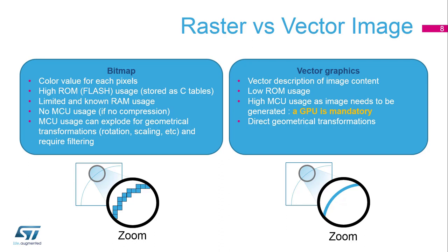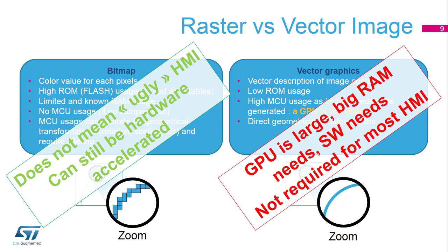Regarding geometrical transformation, a zoomed bitmap reveals individual pixels, whereas zooming a vector graphic just adds a scale factor to its description, which is then computed at display time — a direct geometric transformation but with significant processing. For GUI on microcontrollers, we will use only bitmaps, because we cannot afford a GPU, which is large, requires a lot of RAM, and complex software. A GPU is not required for most HMI applications.